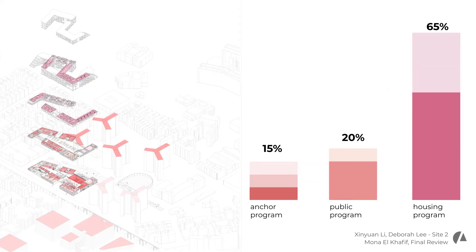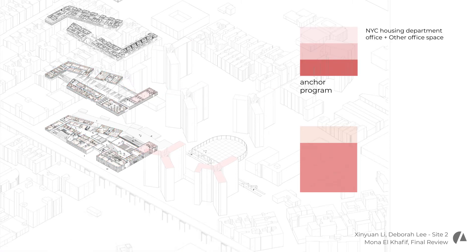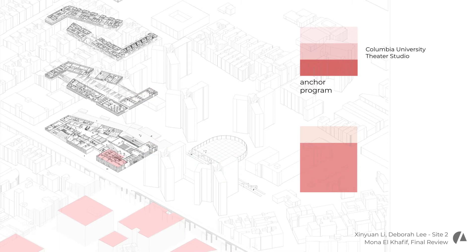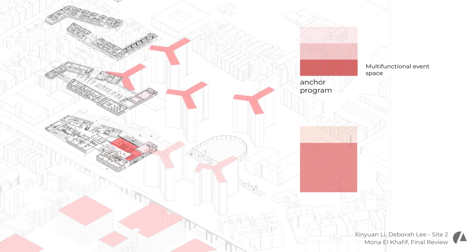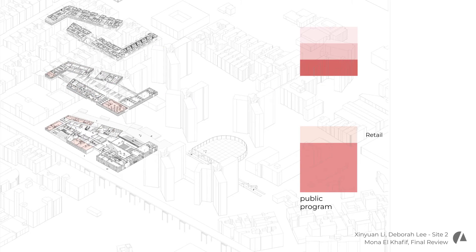Our program is distributed with 50% for the ANCO program, 20% for the public program, and 65% for the housing program. The ANCO programs and public programs are situated in relationship to context: the New York City Housing Department office space is located on the south corner close to the tower housing, the Columbia University Theater Studio program is located at the southwest corner closer to other Columbia buildings, the multifunctional event space is situated at the heart of the public programs for accessible use by multiple groups, and the proposed community learning center is located closer to the tower housing as it serves the existing community. Retail programs are located at street level to serve the street.